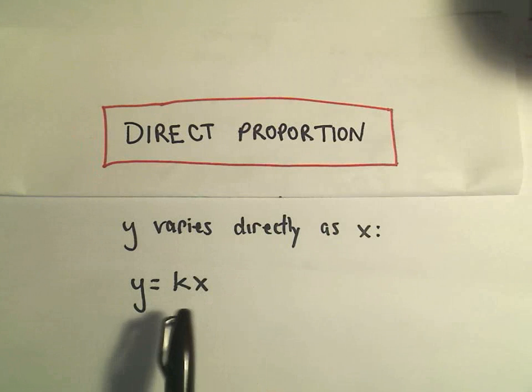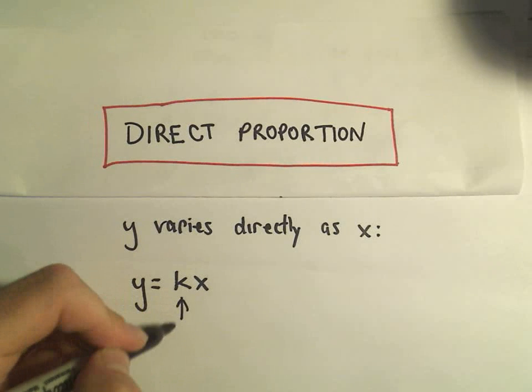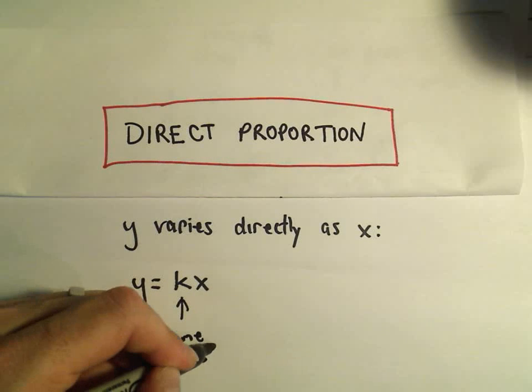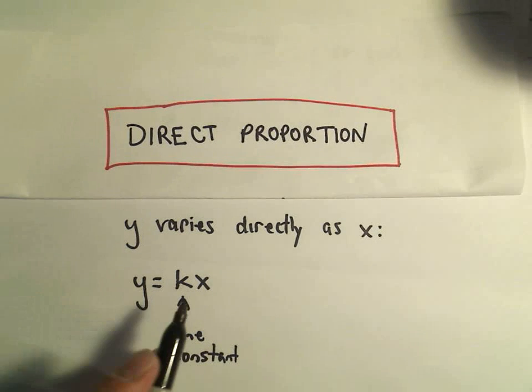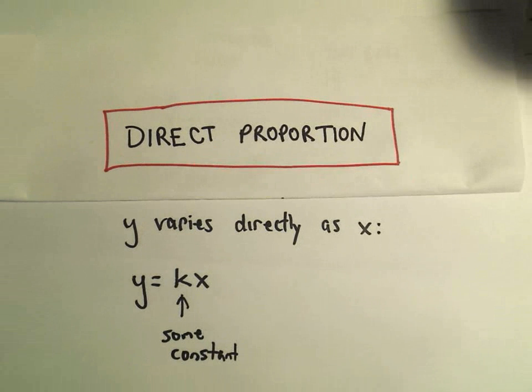The main idea, if things vary directly, this k, which is sometimes called the constant of proportionality, so k is just some number, some constant. The idea is everything is getting multiplied. There's basically no division that you see in here, so when we talk about indirect proportions, you'll see that.